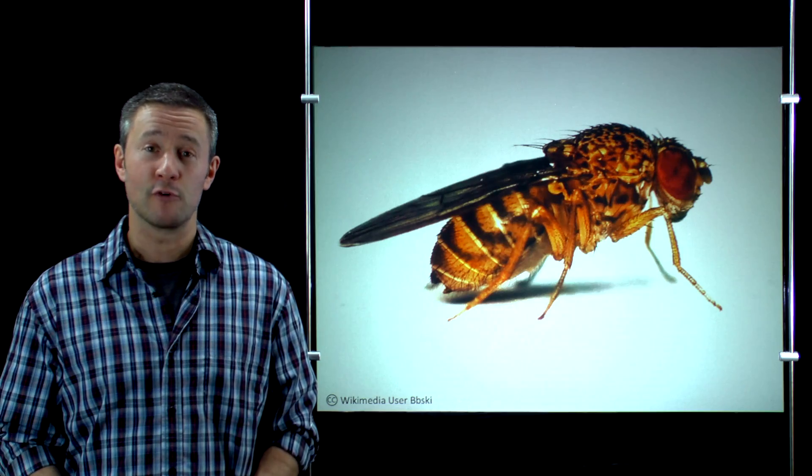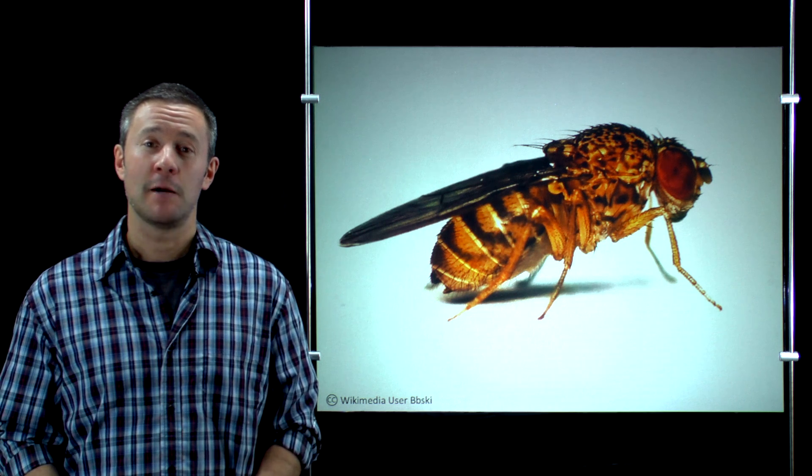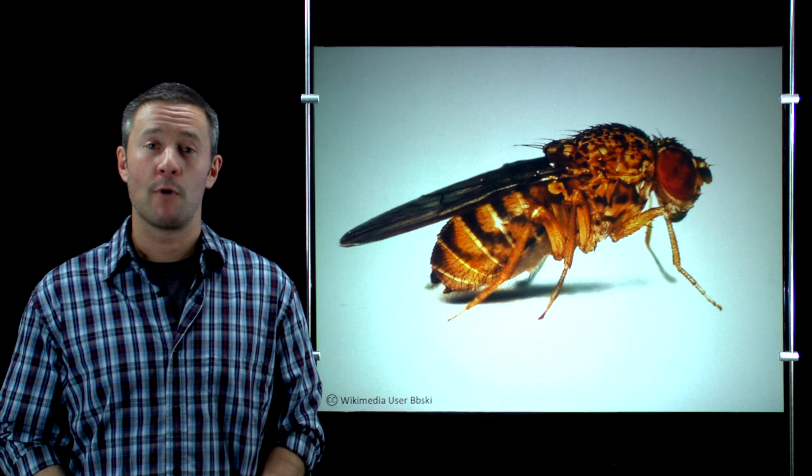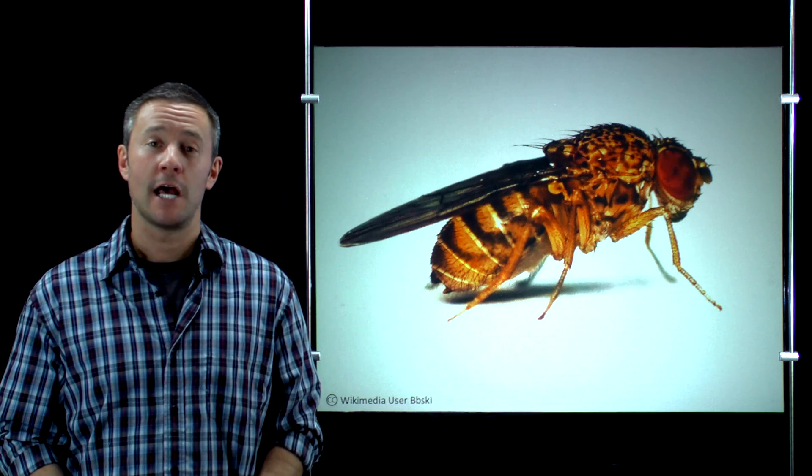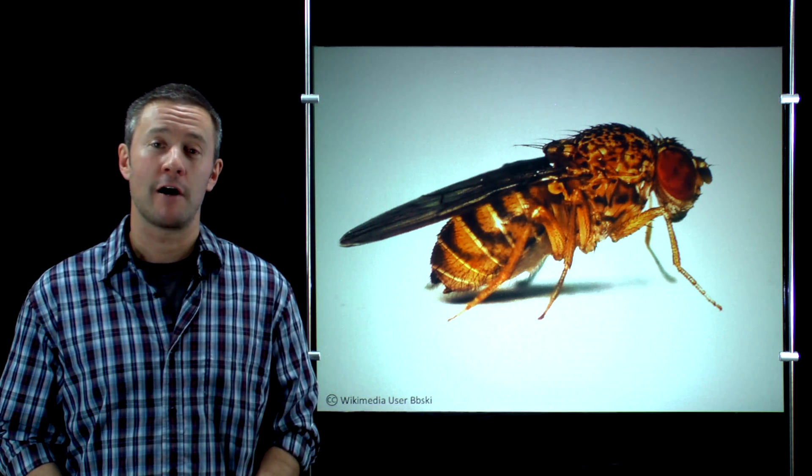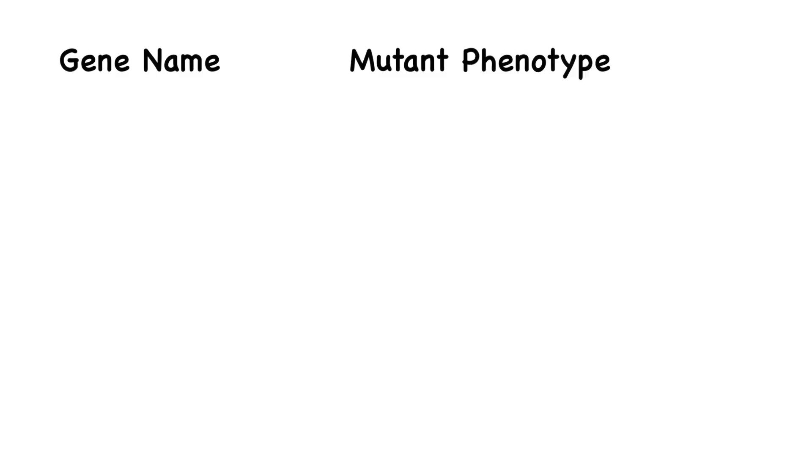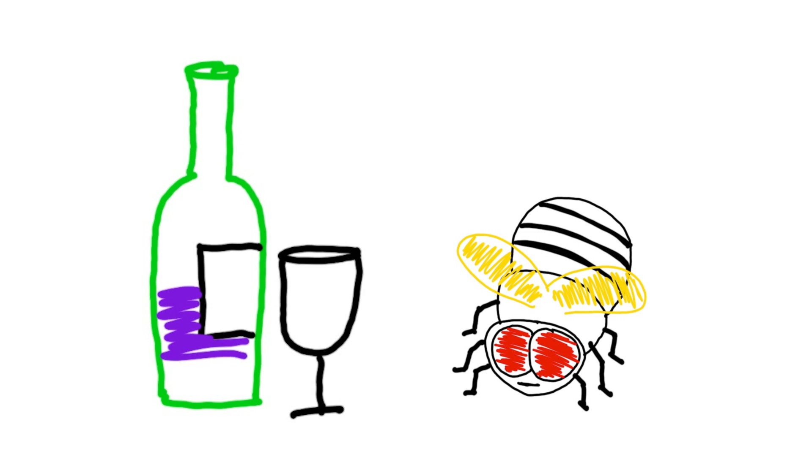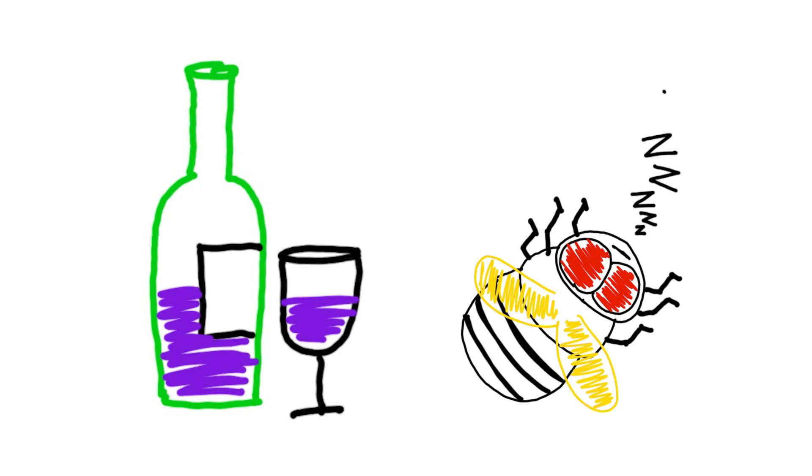Now some researchers get really creative with this and come up with some incredibly clever gene names. And so before I go on, I wanted to take just a minute to tell you about a few of my favorite Drosophila genes. First, there's cheap date and flies with a mutation in the cheap date gene exhibit enhanced sensitivity to alcohol. Flies can become intoxicated just like humans and cheap date mutants are more sensitive to the effects of ethanol than wild type flies.